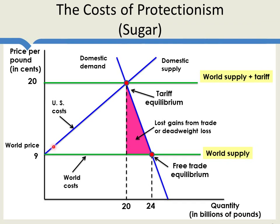The U.S. supply curve can be read as U.S. costs. With the tariff, instead of producing sugar in Brazil where it's cheap, we produce it in Florida where it's expensive — requiring more real resources: more irrigation, more valuable land, more fertilizer. These are wasted resources. When the domestic industry expands because of the tariff, we invest more resources in producing sugar than are necessary. The tariff switches production from low-cost world producers to high-cost domestic producers, generating wasted resources.